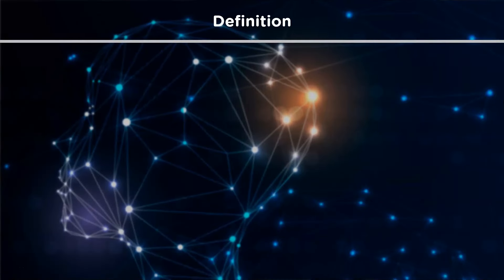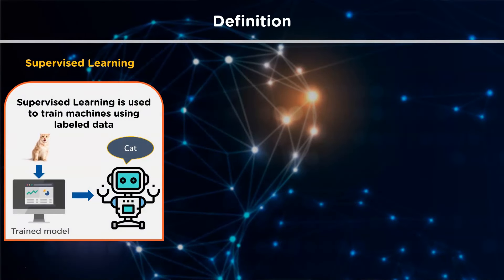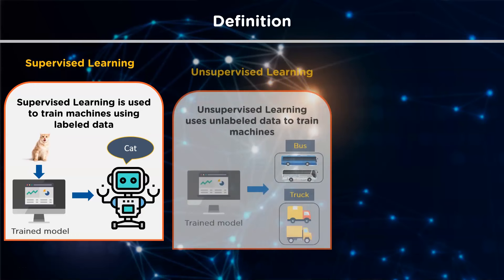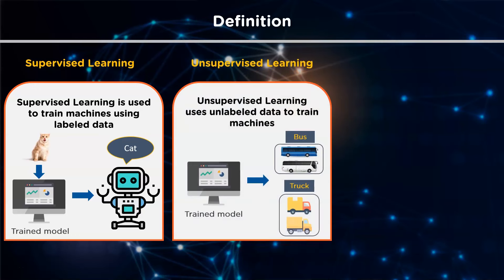Supervised learning uses labeled data to train machine learning models. Labeled data means that the output is already known to you — the model just needs to map the inputs to the outputs. An example of supervised learning can be to train a machine that identifies the image of an animal. You can see a trained model that identifies the picture of a cat.